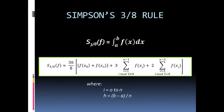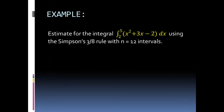For our example, we're going to estimate the integral of x squared plus 3x minus 2 dx from 2 to 5 using Simpson's 3/8 rule with n equal to 12 intervals.